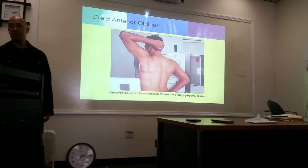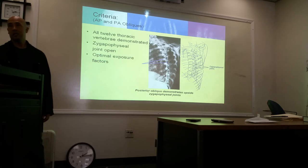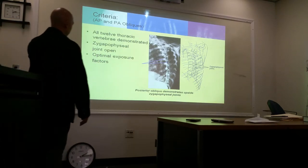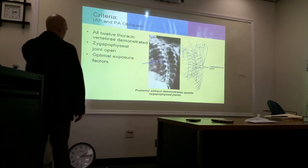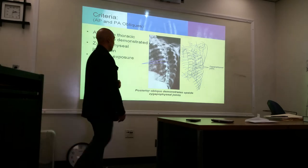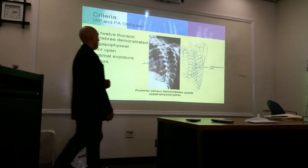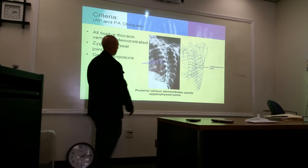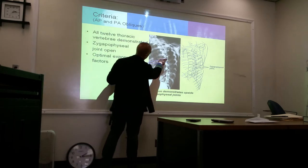Anterior oblique demonstrates the side closest to. All 12 thoracic vertebrae should be demonstrated. The zygapophyseal joints should be open — very difficult to see, but there they are.